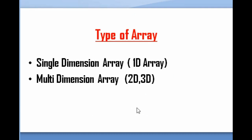Types of array ki baat karein to array do types par define hota hai: single dimension array aur multi dimension array. Single dimension ko 1D array bhi bolte hain, aur multi dimension mein 2D, 3D, 4D aate hain. 2D aur 3D zyada use hote hain, inme se 2D most important hai aur bahut zyada use hota hai — isko hum next lecture mein dekhenge.